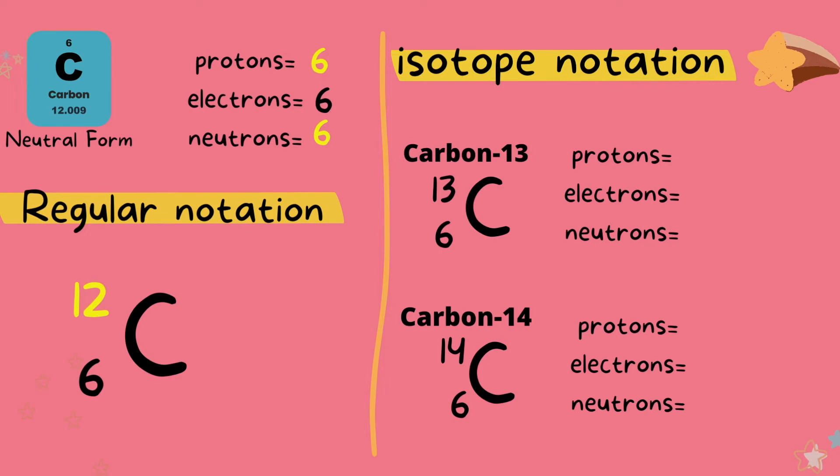Starting with carbon-13, we have 6 protons because the atomic number is 6. We have the same amount of electrons because this is a neutral atom. We find the number of neutrons by subtracting 6 from 13 and we get 7. So 6 protons and 7 neutrons is what gives us a mass number of 13.